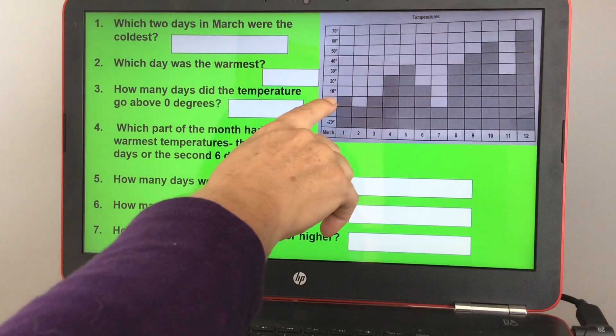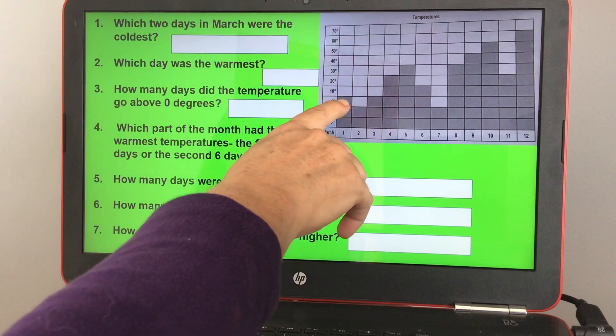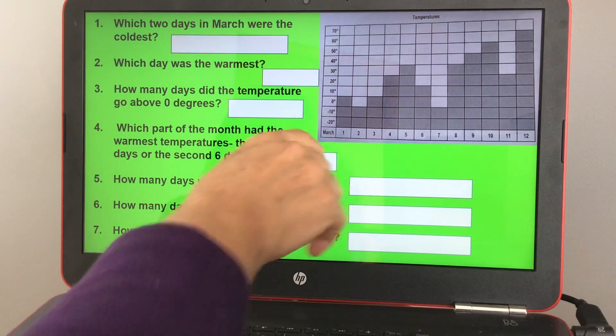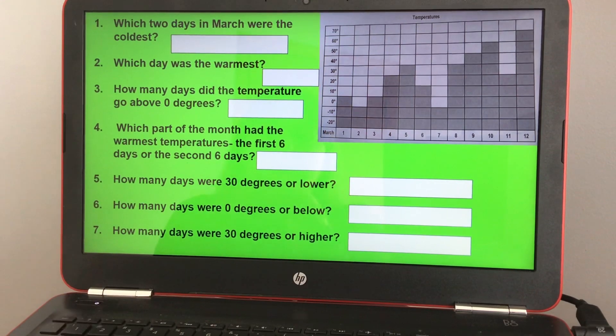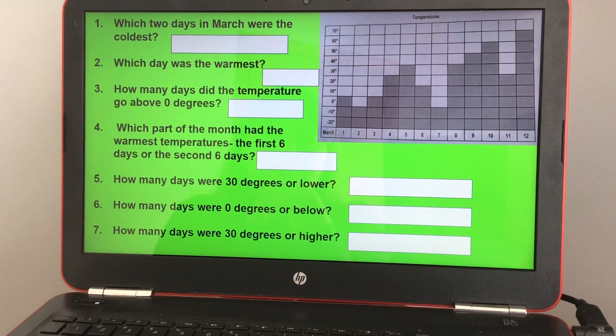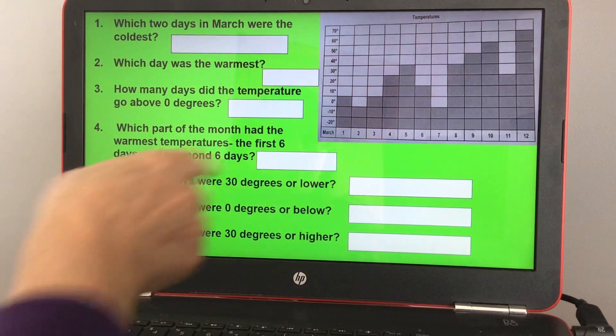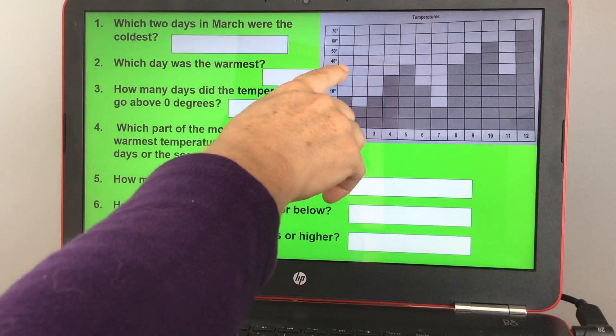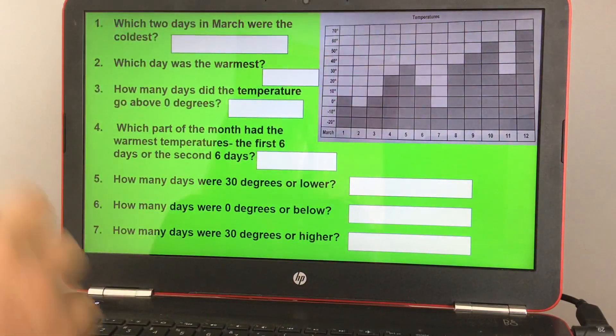Okay, so number six, how many days were zero degrees or below? So here's zero degrees, so it either has the box by zero or lower. And number seven, how many days were 30 degrees or higher? You'd have to go to 30 and have a box by 30 or above it, for warmer.